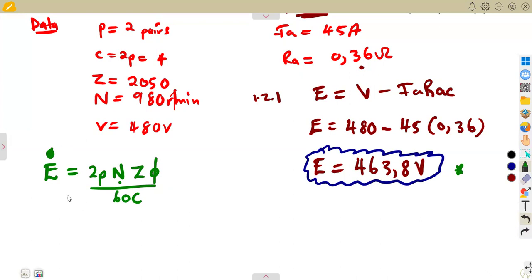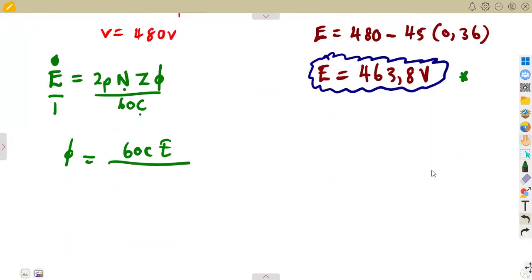Because we were not having the generated EMF otherwise if it was already given we're just going to use the formula straightforward. So guys I talked about manipulating this. So the flux is going to be 60 times C times E, then definitely divide by 2P times N times Z.